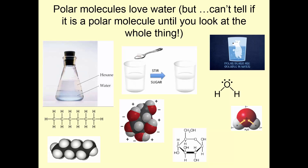So what does this mean? Here's hexane — it's very non-polar. No arrows, no polar bonds. And it doesn't mix with water — you have two layers. Here's sugar — look at all of the polarity of this molecule, it's got positive and negative sides all over the place. So this is polar. And hexane is non-polar. What does that mean about its properties? Hexane and water don't mix because one's polar and one's not. Sugar and water mix because they're both polar.